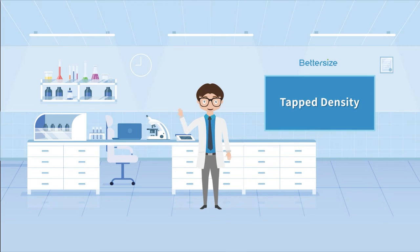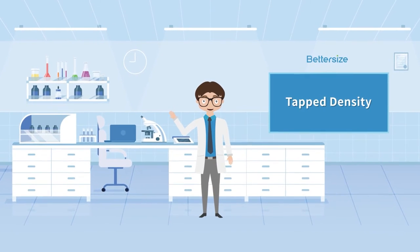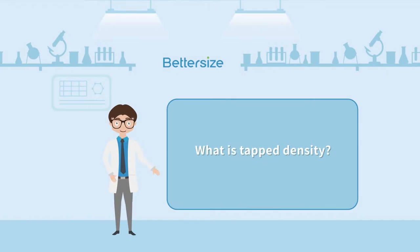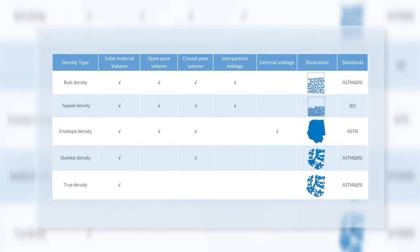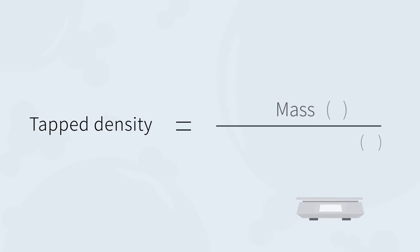Hi everyone, welcome to Dr. Bettersize's lab. Have you ever wondered what tapped density is? Tapped density is one kind of powder density and defined as the ratio from mass by tapped volume.